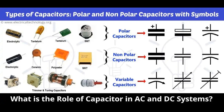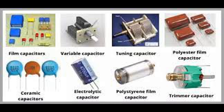Motor running capacitors are often oil-filled, metalized polypropylene, or metalized polyester capacitors. The running capacitor continues to operate after the startup phase, providing additional phase shift to the motor's winding. This phase shift improves the motor's efficiency and power factor during normal operation. The running capacitor is connected in parallel with the motor winding during the running state. It remains in the circuit continuously, contributing to the motor's performance by optimizing the current and voltage relationships in the motor windings.